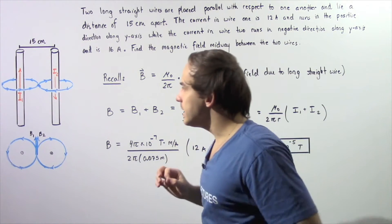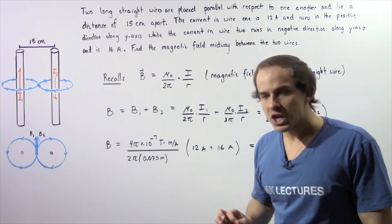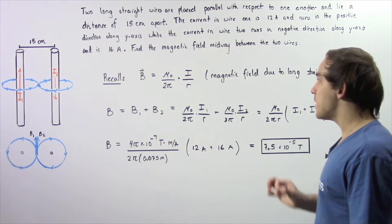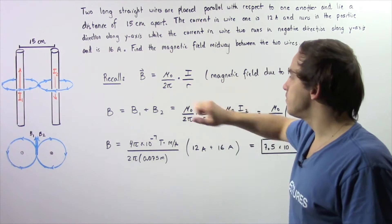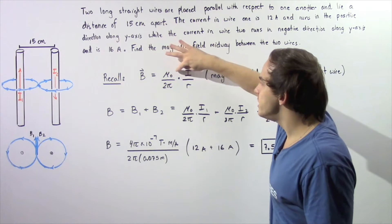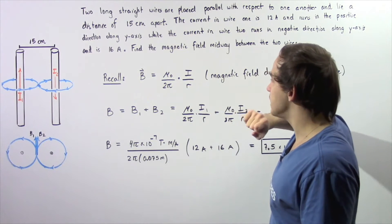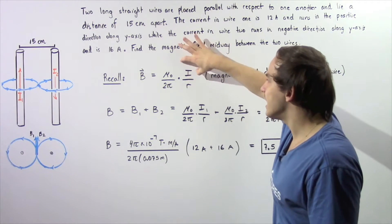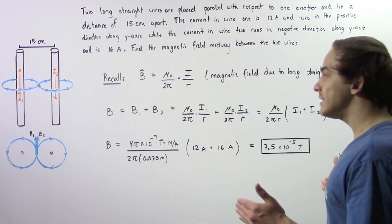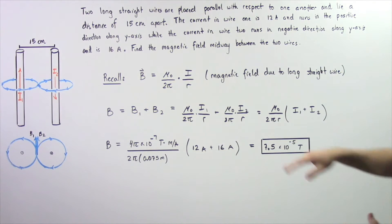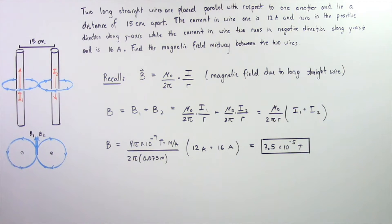Let's begin by recalling the magnitude of the magnetic field produced as a result of an electric current in a very long conducting wire. The magnetic field magnitude is given by B = (μ₀ / 2π) × (I / r), where I is the electric current inside the wire and r is the perpendicular distance from that wire.